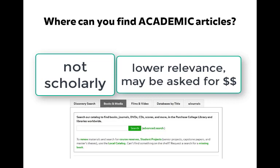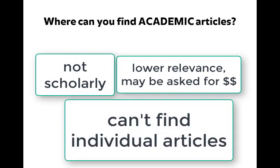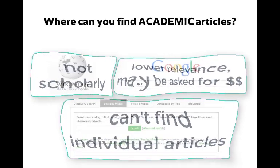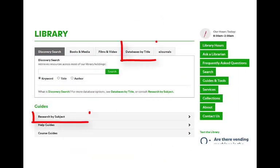The Purchase College Library Catalog contains records for books, music scores, DVDs, and CDs, but not for individual academic articles. To find academic articles, you will need to use a library database.